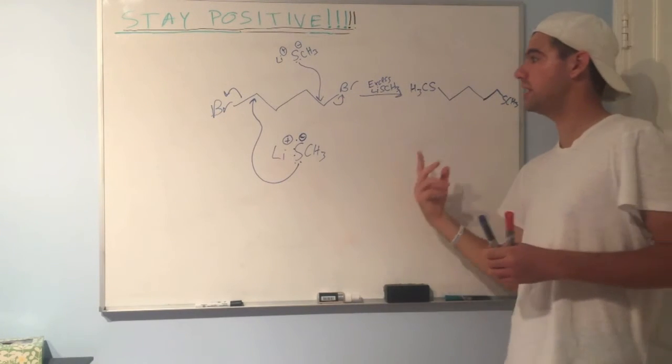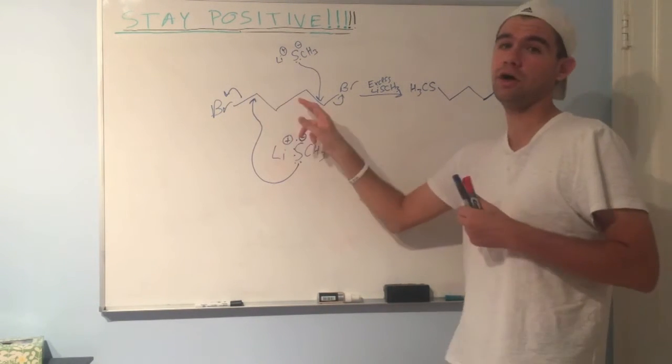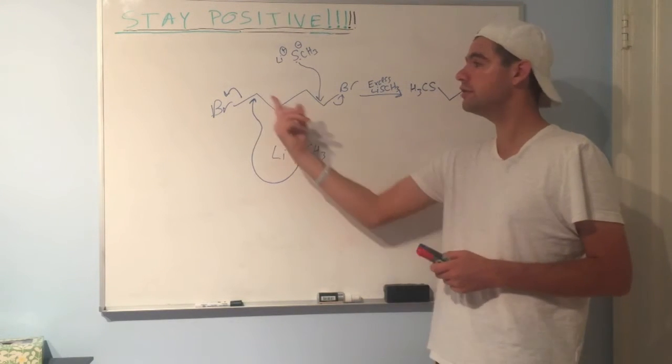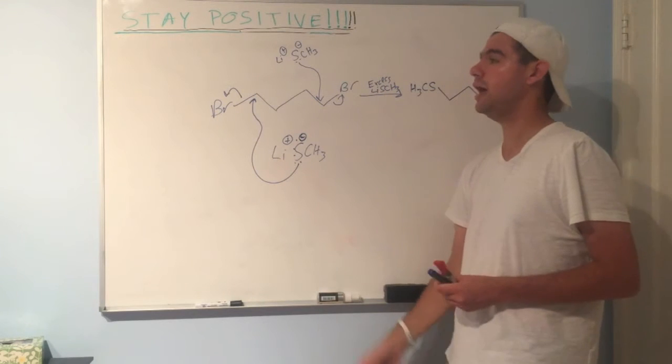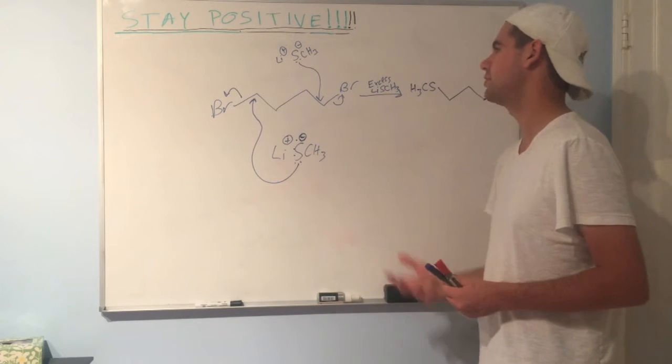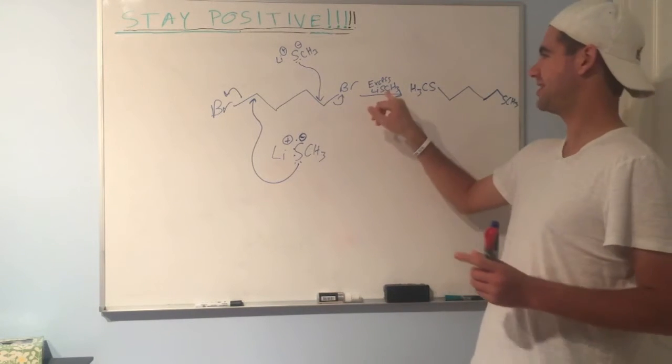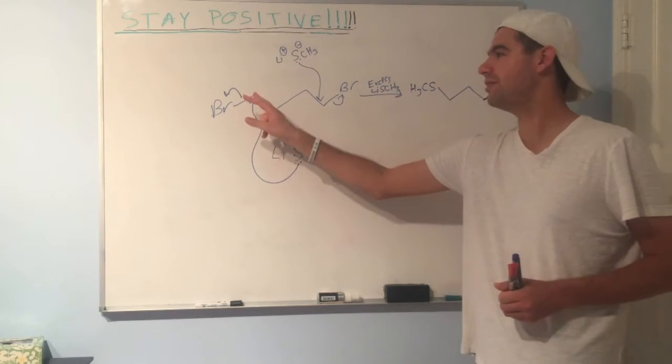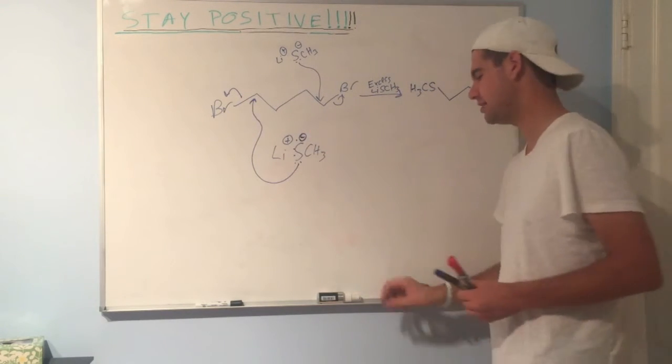Make sure that's an important point that I just thought of. Make sure to count your carbons on tests. That's a really easy way to get points docked off. If you need to, number your carbons, right? And make sure that in your answer you have the same number of carbons that you started with. Of course, you'll have two more carbons because the SCH3 has a carbon in it, but you know what I mean. You have to count the skeleton. Make sure the skeleton stays the same.